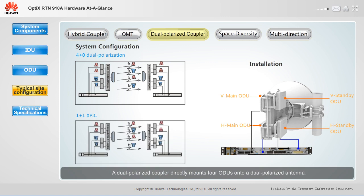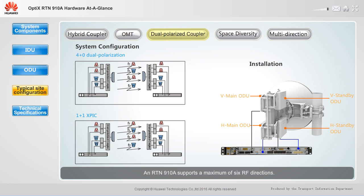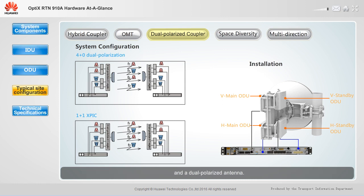A dual polarized coupler directly mounts 4 ODUs onto a dual polarized antenna. It can achieve 4+0 dual polarization and 1+1 XPIC configurations. To support more than 2 RF directions, IF boards must be installed in extended slots. An RTN910A supports a maximum of 6 RF directions. These configurations require a system control board, an IS-M6 board, 4 ODUs, a dual polarized coupler, and a dual polarized antenna.